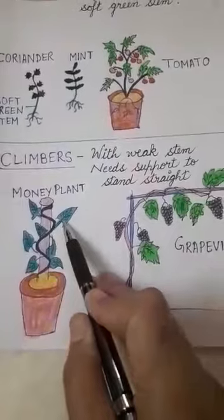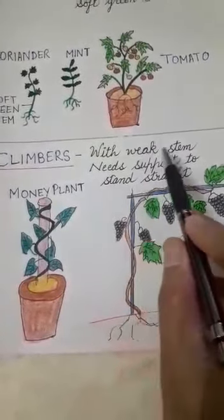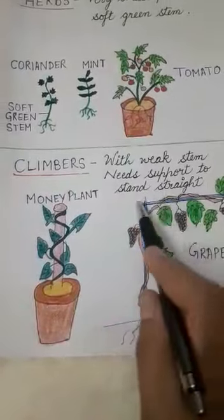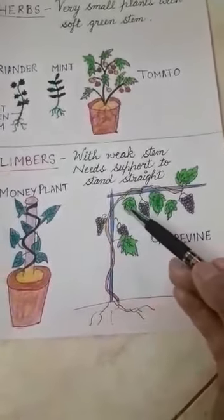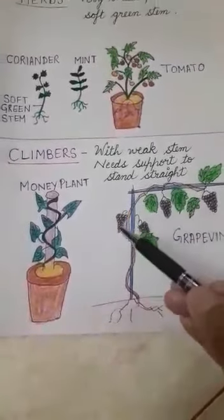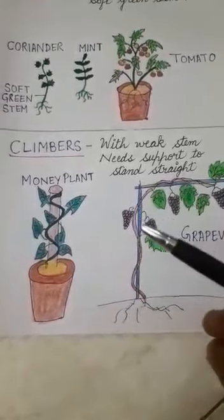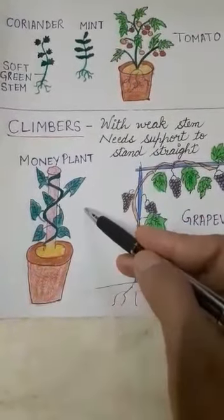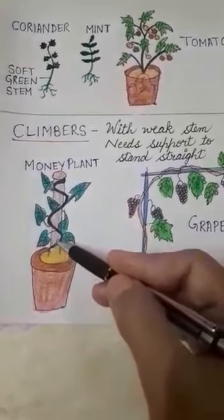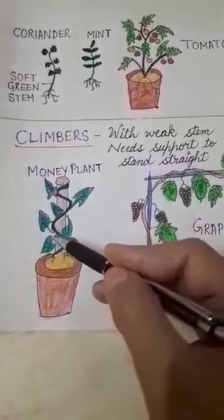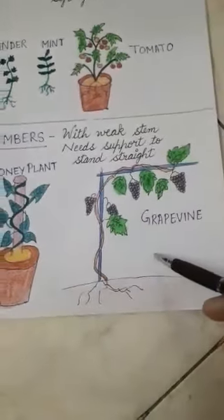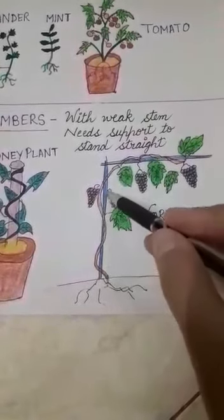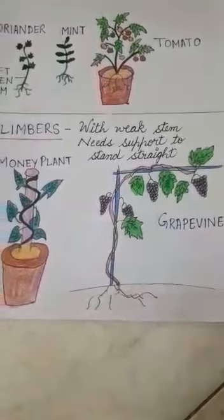The next type is climbers. Climbers have a weak stem and they need support to stand straight. As they have a weak stem, they cannot stand straight on their own. I have drawn a picture of a money plant — you can see the support and the climber growing on it. Another example is the grape vine. It is a climber and it needs support to stand straight.